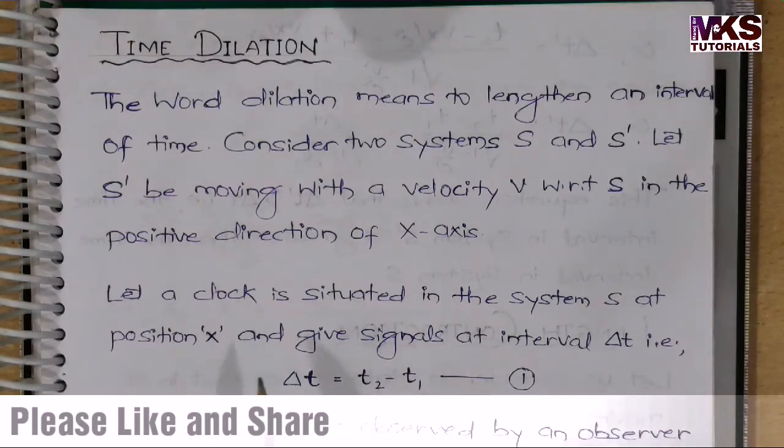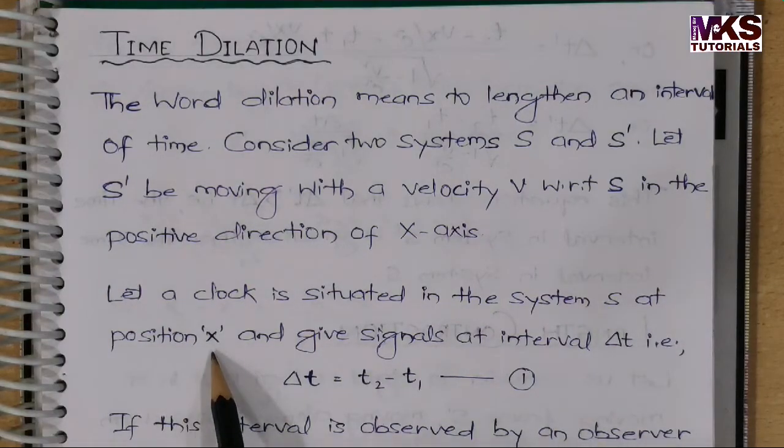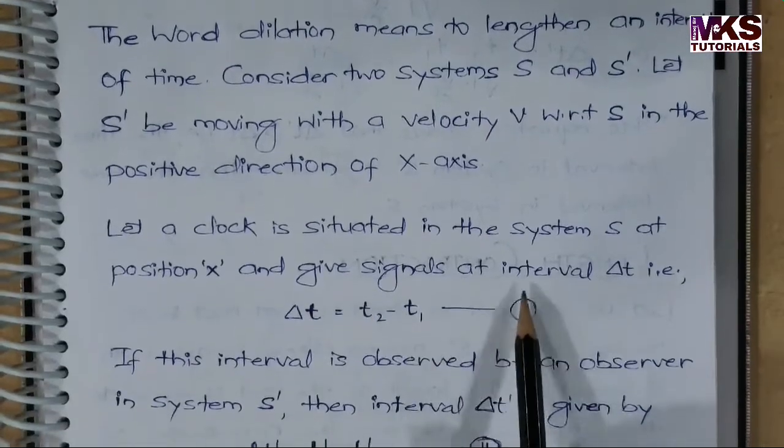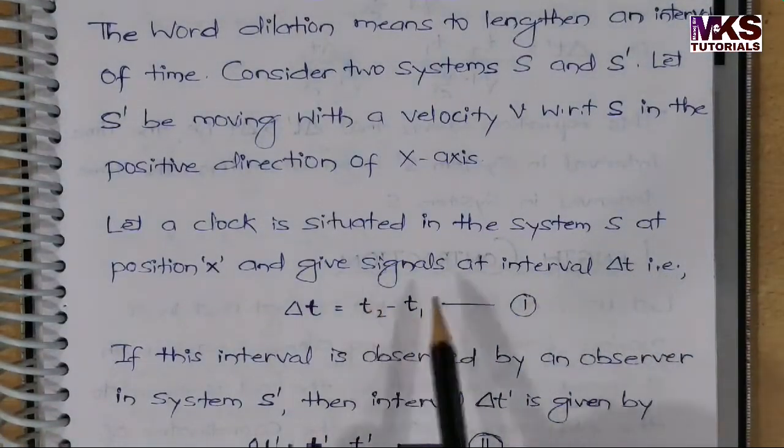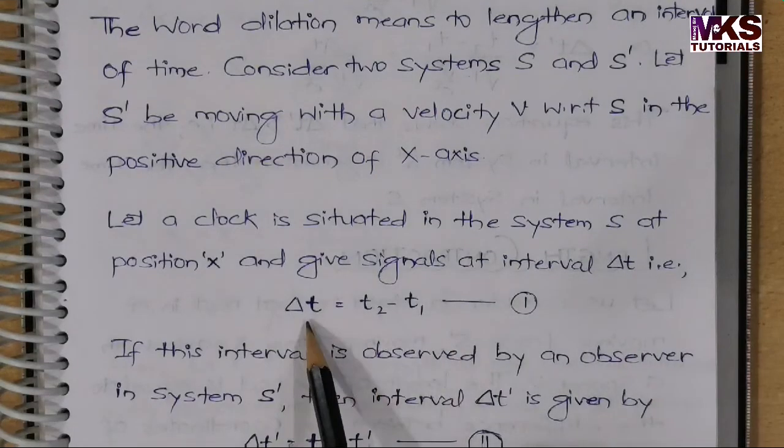Let a clock be situated in the system S at position X and give signals at interval Delta T. That is, Delta T value.